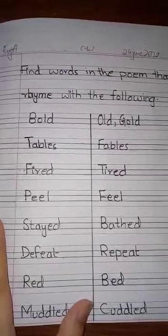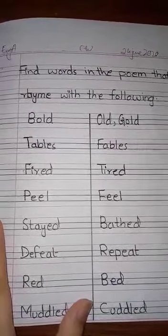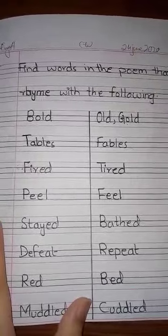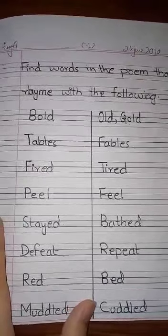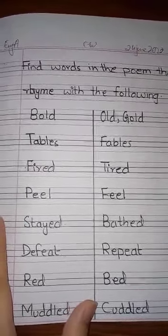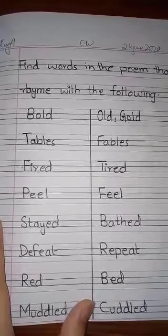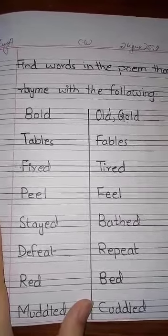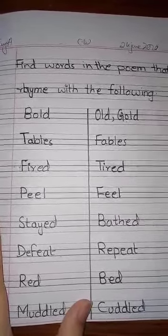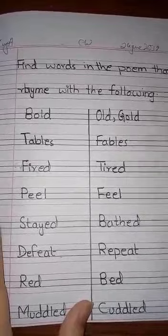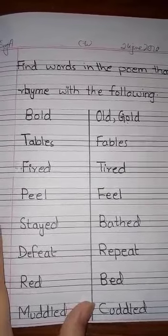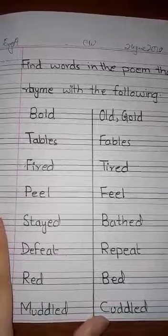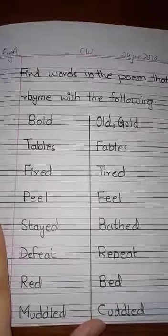The rhyming answers are: for bold is old or gold, for tables is fables, for fire is tired, for peel is feel, for stayed is bathed, for defeat is repeat, for red is bad, for muddled is cuddled.